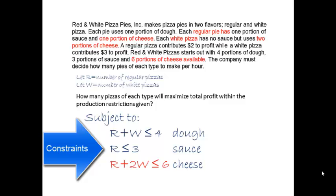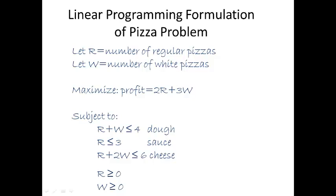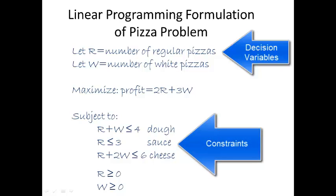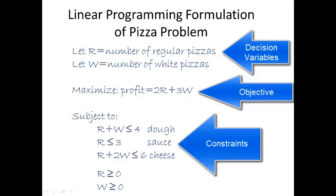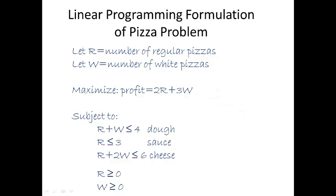The complete linear programming formulation for the pizza problem is shown here. Non-negativity constraints have been added for each decision variable — the least you can make of any product is zero. Notice that this linear programming problem has two decision variables, three constraint equations (actually inequalities), and one objective. Every linear programming problem has only one objective, no matter how large the problem is. The one objective is what gives it one unique optimal solution. At this point, the linear programming problem is formulated mathematically and is ready to be solved.